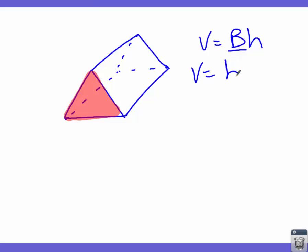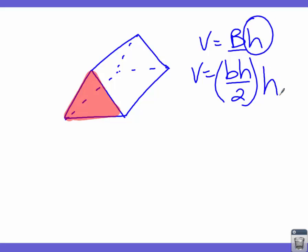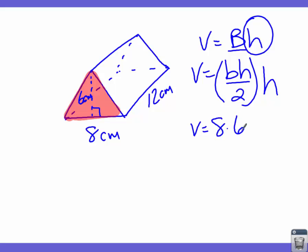We use the formula base times height divided by 2 for the triangle. It's important to understand that the H in the volume formula is the depth or distance between the two bases — distinct from the triangle's own height. The base of the triangle is 8 centimeters, the height of the triangle is 6 centimeters, and the prism is 12 centimeters deep.